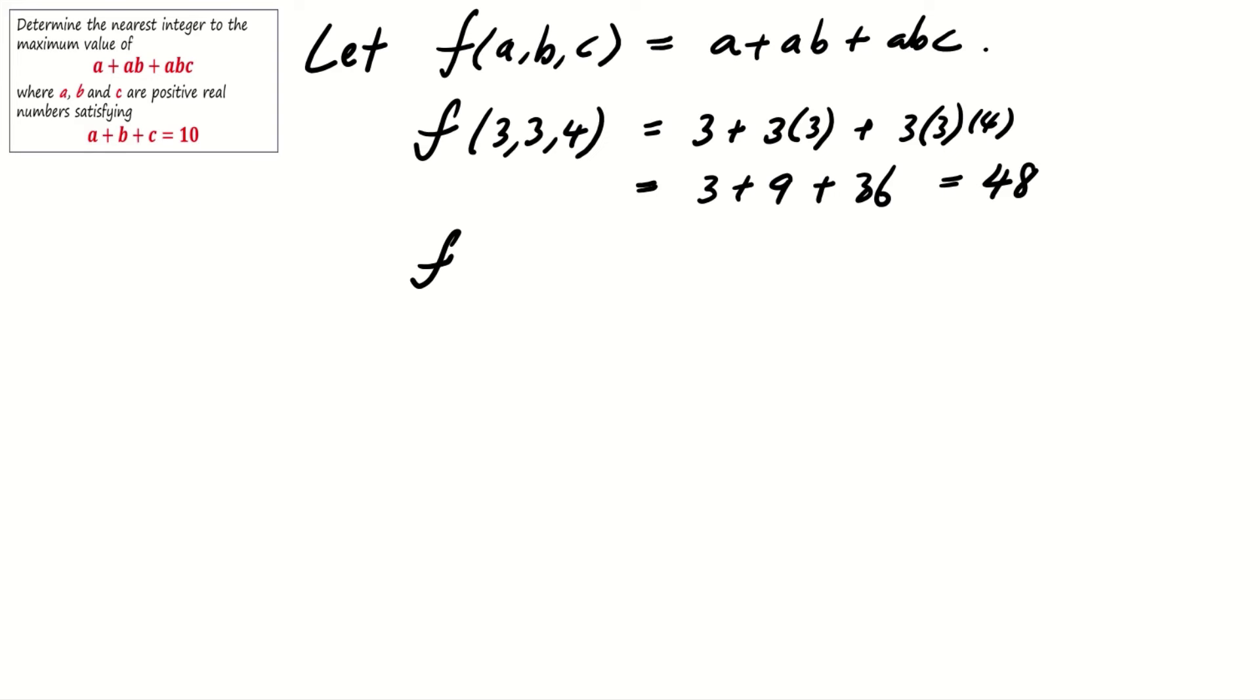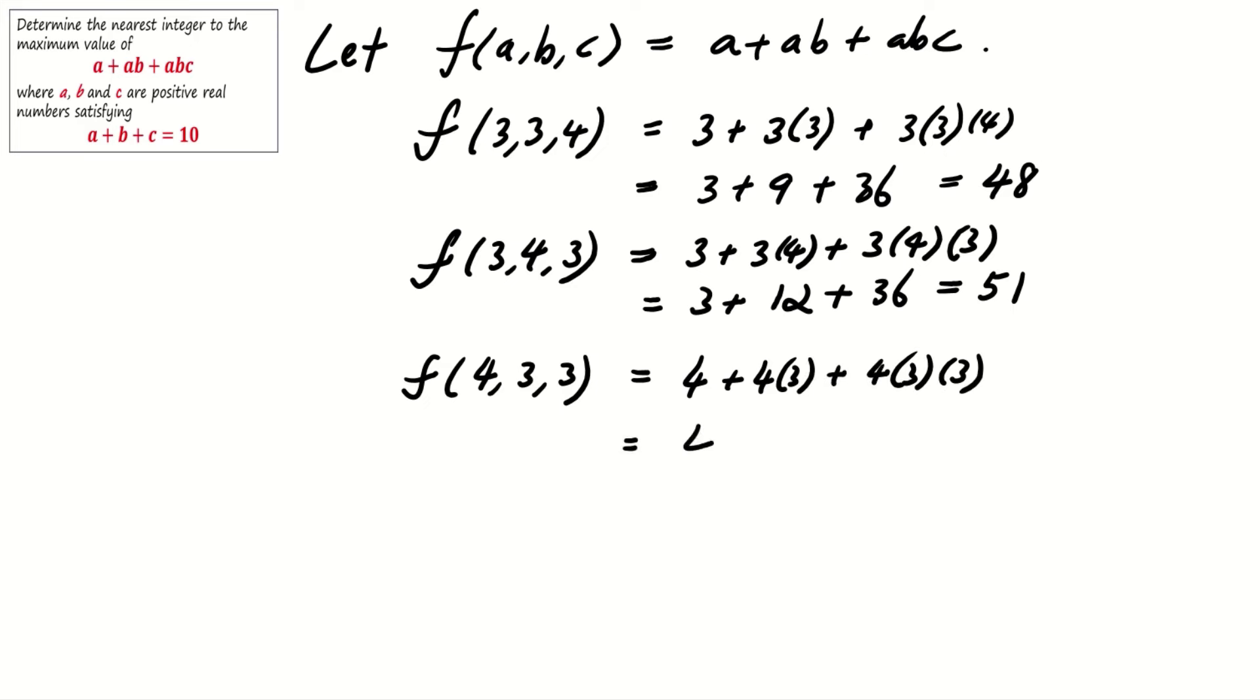Adjusting slightly, trying a equals 3, b equals 4, and c equals 3 gives f equals 51, an improvement. It becomes clear that setting a equals 4, b equals 3, and c equals 3 will give a value greater than 51. Specifically, f equals 52.